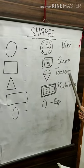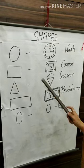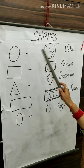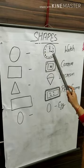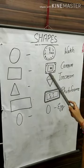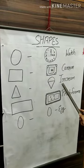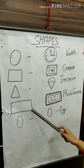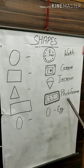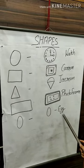I am going to show you some examples of shapes. Circle — watch. Square — carom. Triangle — ice-cream. Rectangle — photo frame. Oval — egg.